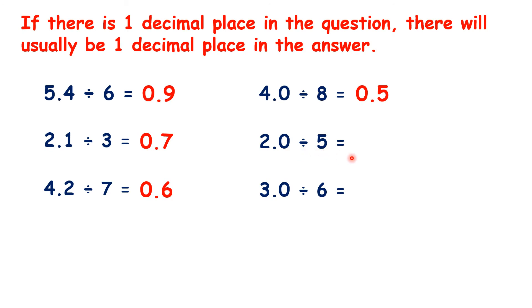20 divided by 5 is 4, so 2 divided by 5 is 0.4. And 30 divided by 6 is 5, so 3 divided by 6 is 0.5.